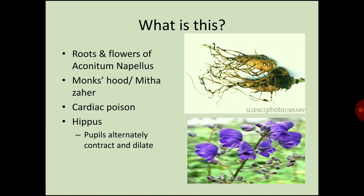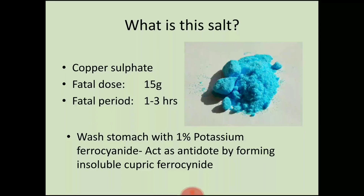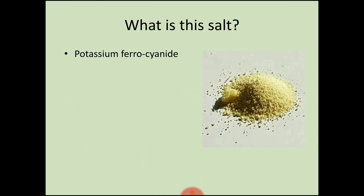The next salt is copper sulfate. The fatal dose of copper sulfate is 15 grams and the fatal period is 1 to 3 hours. Washing the stomach with 1% potassium ferrocyanide acts as an antidote for copper sulfate by forming insoluble cupric ferrocyanide.